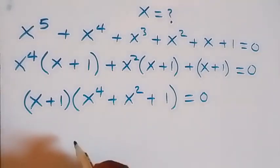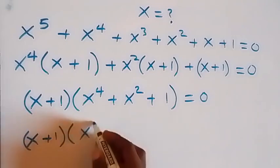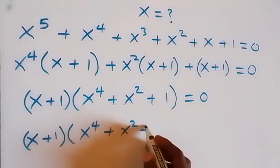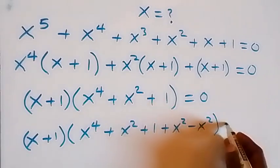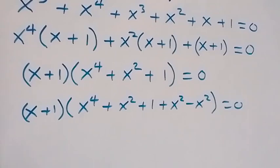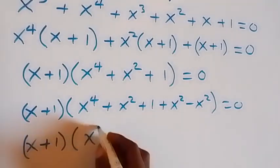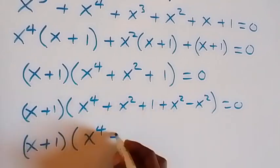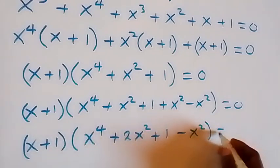Then in the next step, let's add x squared and subtract x squared from here. This becomes x plus 1, then into bracket x raised to power 4 plus x squared plus 1, then here we have x squared minus x squared equals to 0. And from here, we can group this together: x plus 1 into bracket, x raised to power 4 plus 2x squared plus 1 minus x squared, then equals to 0.